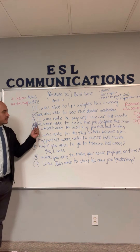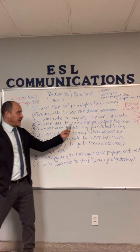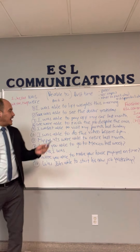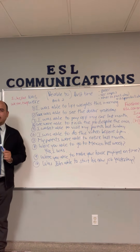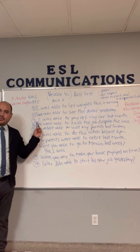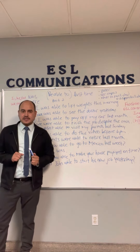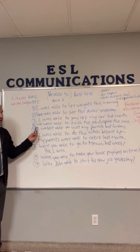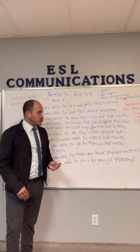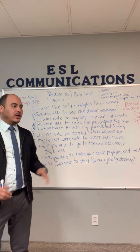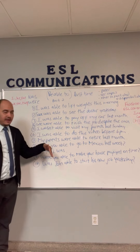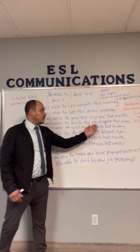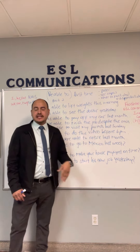Number three: I was able to pay off my car last month. Yo pude terminar de pagar mi carro el mes pasado. Number four — a plural example: We were able to finish the job despite the rain. Nosotros pudimos terminar el trabajo a pesar de la lluvia. 'Despite' significa 'a pesar de.'